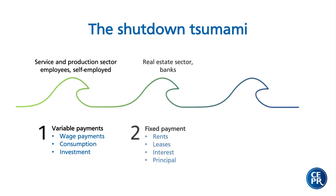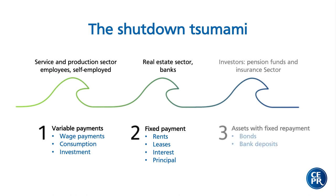In a second wave, the tsunami will hit the real estate sector and the banks. In this sector, payments are normally fixed for a longer period of time — rents, interest and principal. The problem is that companies in the service and production sector will no longer be able to make these payments in full. If this continues, a third wave could hit even investors and pension funds if banks are no longer able to deal with their loans.